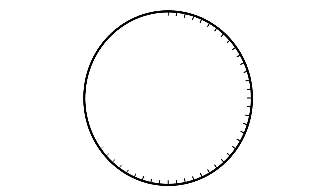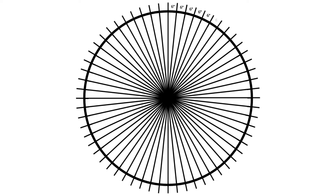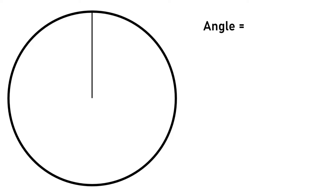Next, we will draw the minute ticks. There are 60 minutes in an hour, so we need to draw 60 little lines around the circle with an equal angular gap. To calculate the angular gap, we need some maths. We know there are 360 degrees in a circle, and we divide it by 60 because there are 60 minutes in an hour. 360 divided by 60 is 6, so the angular gap is 6 degrees.